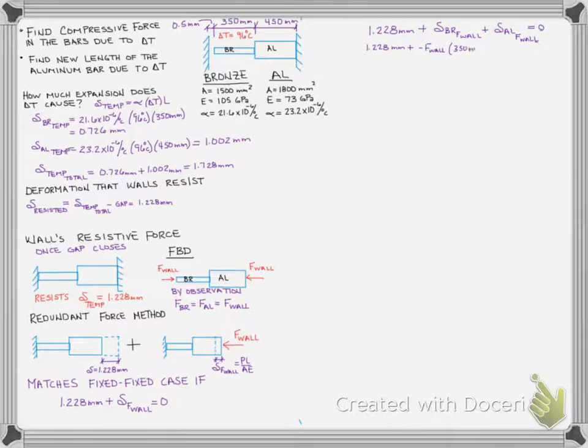So we can just write out our equation. So we would have our original deformation and then the deformation on the wall at the bronze. So our 350 length, 1500 millimeter area and our E is in gigapascals, but I can write that as kilonewtons per millimeter squared. That's the same as a gigapascal.